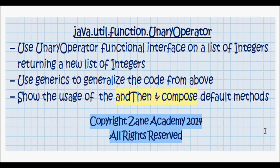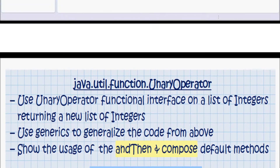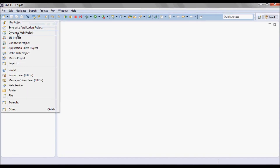In this tutorial, I'm going to use the UnaryOperator functional interface in order to operate on a list of integers and return a new list of integers. Then I'm going to use generics in order to generalize that code, and lastly I'm going to show the usage of the andThen and the compose default methods.